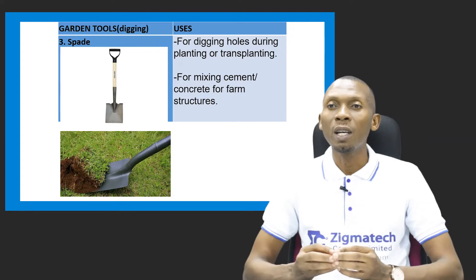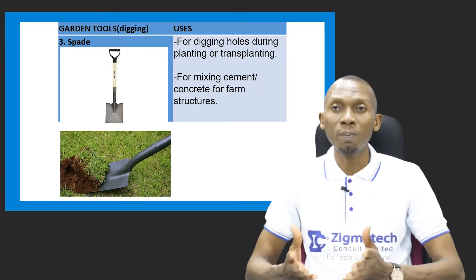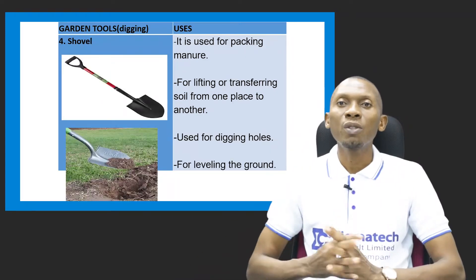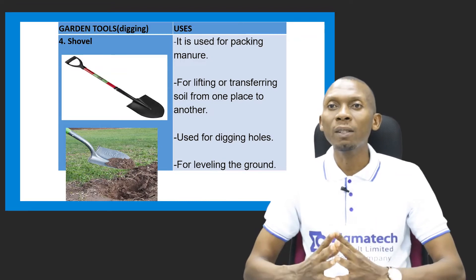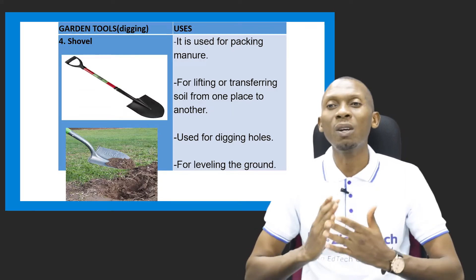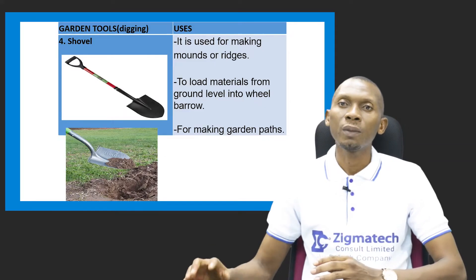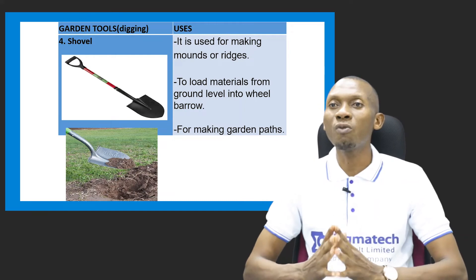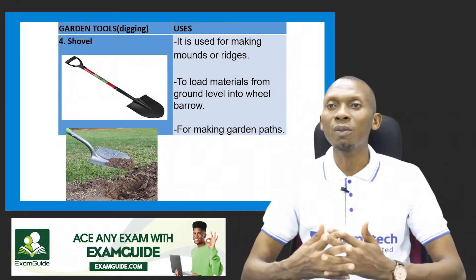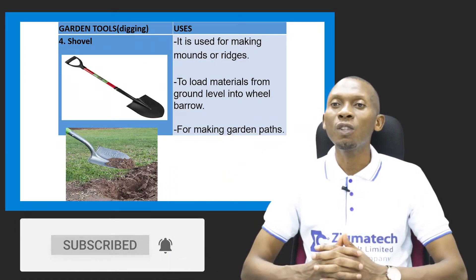Continuing with the shovel: it can be used for packing manure, for lifting or transferring soil from one place to another, for digging holes and leveling the ground. It can also be used for making mounds or ridges on which crops can be planted, for loading materials from ground level into the wheelbarrow, and for making garden paths.